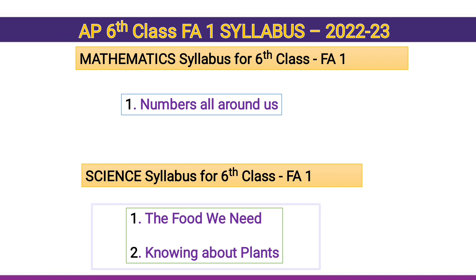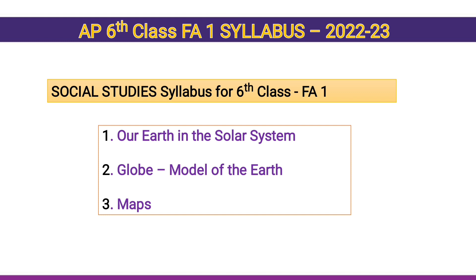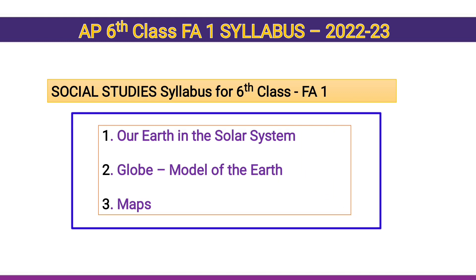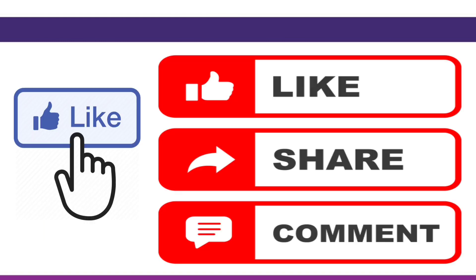Science syllabus for sixth class FA1 is: The Food We Need, and Knowing About Plants. Social Studies syllabus for sixth class FA1 is: Our Earth in the Solar System, Globe - Model of the Earth, and Maps.